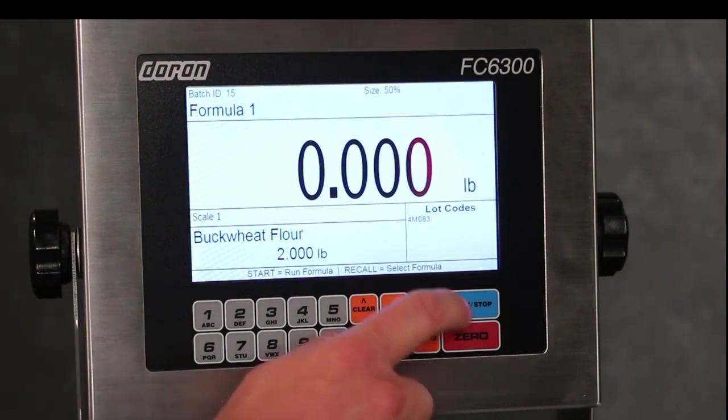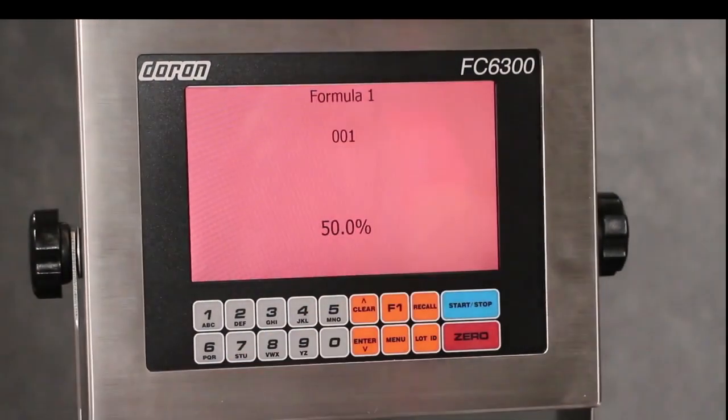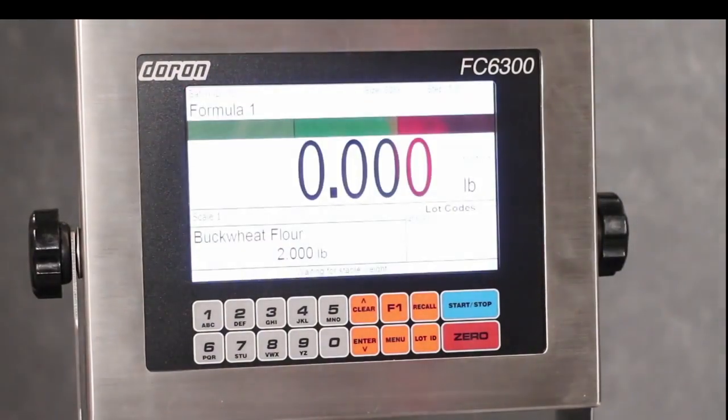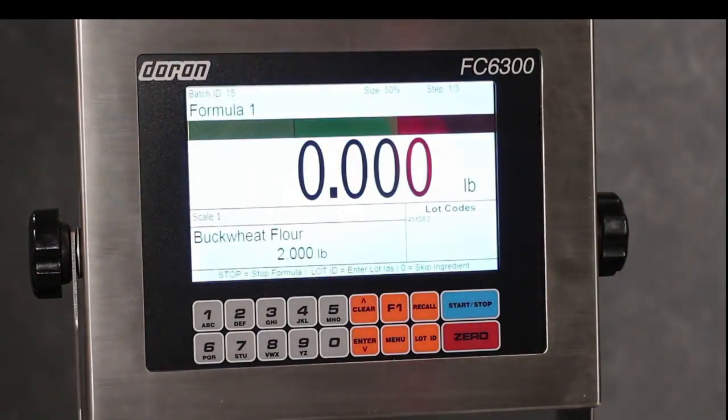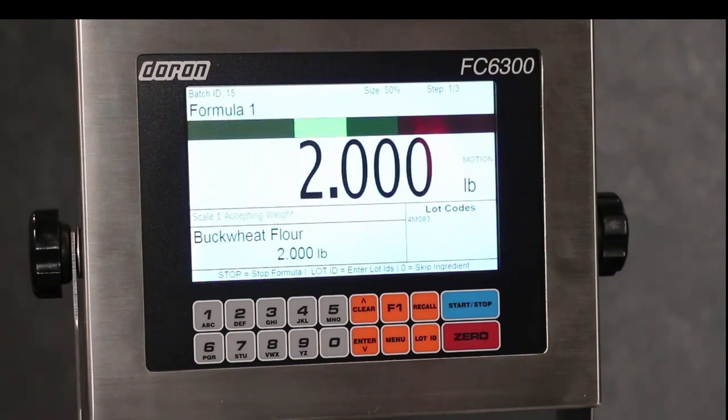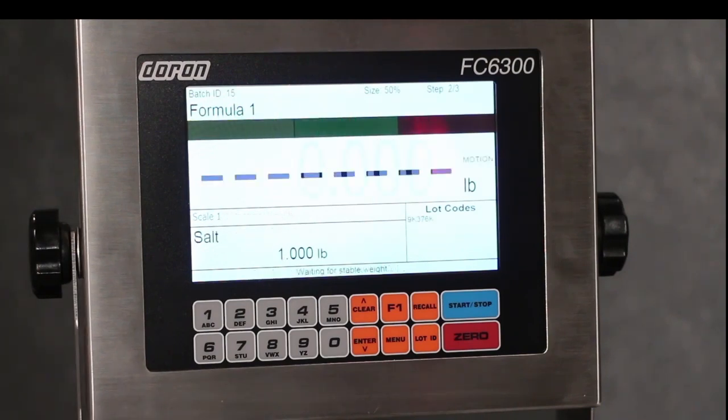Now I'll press the start button to begin the batch. After I press the start button, the process is hands-free. This means that I can use both of my hands to add the ingredients of the batch. The FC6300 will automatically be zeroing the scale after I reach the target weight. I won't be reaching over and pressing the zero button ever again.